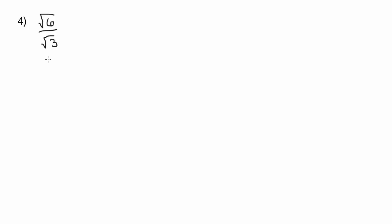Let's take the same approach we've been taking. So we've got the square root of 6 over the square root of 3. So when we realize we have a radical in the denominator, typically what we've done, so I'm going to rewrite the problem, square root of 6 over square root of 3.